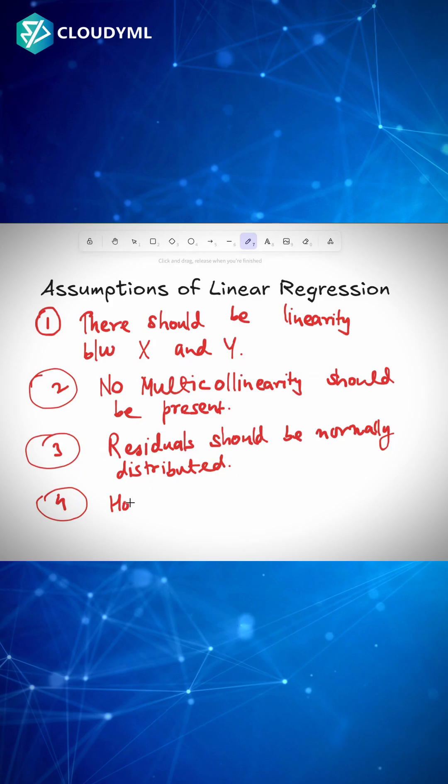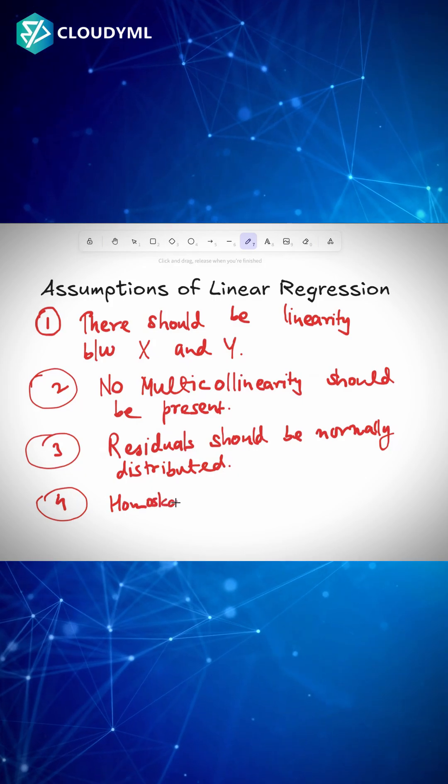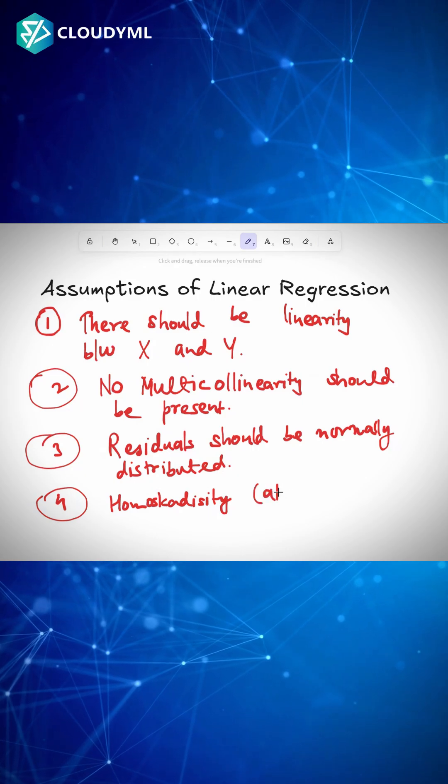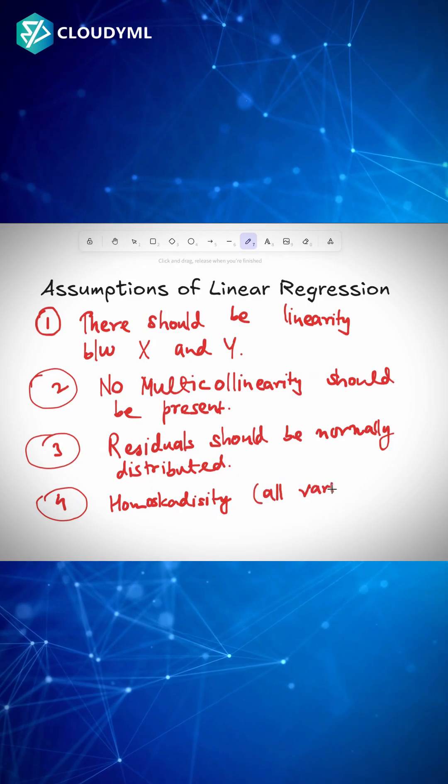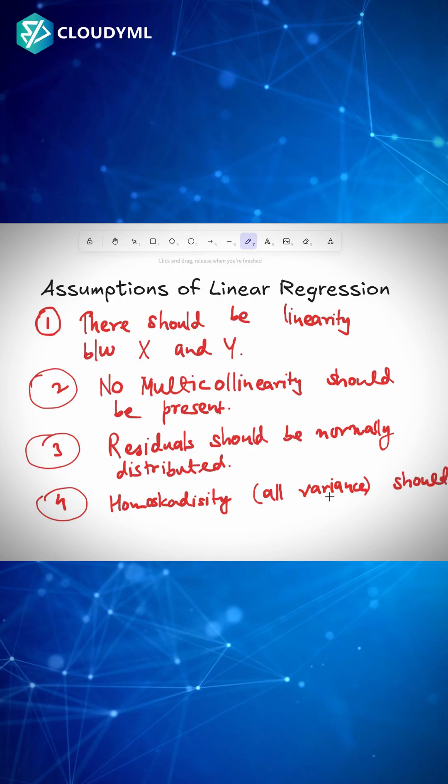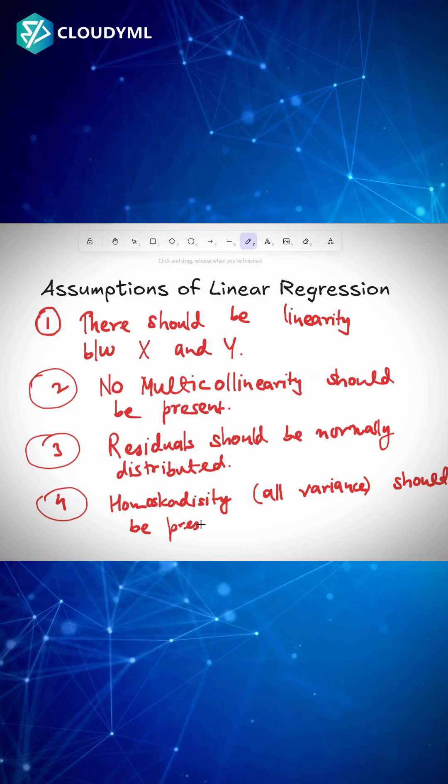The fourth is homoscedasticity should be present. What does that mean? It means that at all the parts the variance should be equal. Equal variance should be present. That is the fourth assumption.